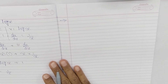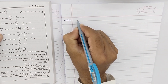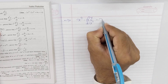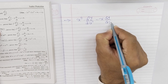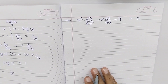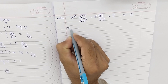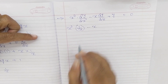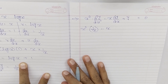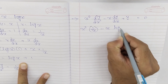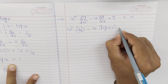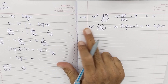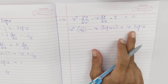Ab hame prove karna hai, toh next page pe lete hain. Question number 19 mein prove karna hai: x²·(d²y/dx²) - x·(dy/dx) + y = 0. So substituting: x²·(1/x) - x·(log(x) + 1) + x·log(x). Yeh hoga x² times 1/x, minus x times (log(x) + 1), plus x·log(x).